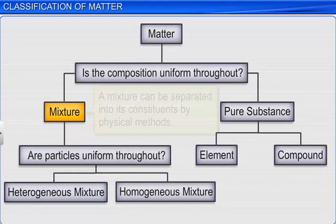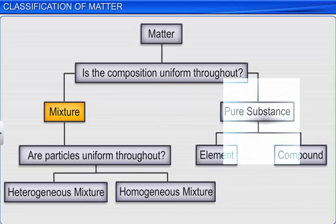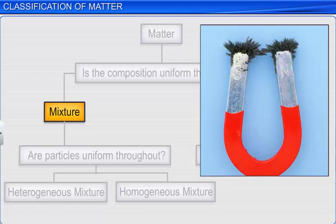A mixture can be separated into its constituents by physical methods. For example, a mixture consisting of iron filings and sulphur powder can be separated by using a magnet, that is, by magnetic separation.